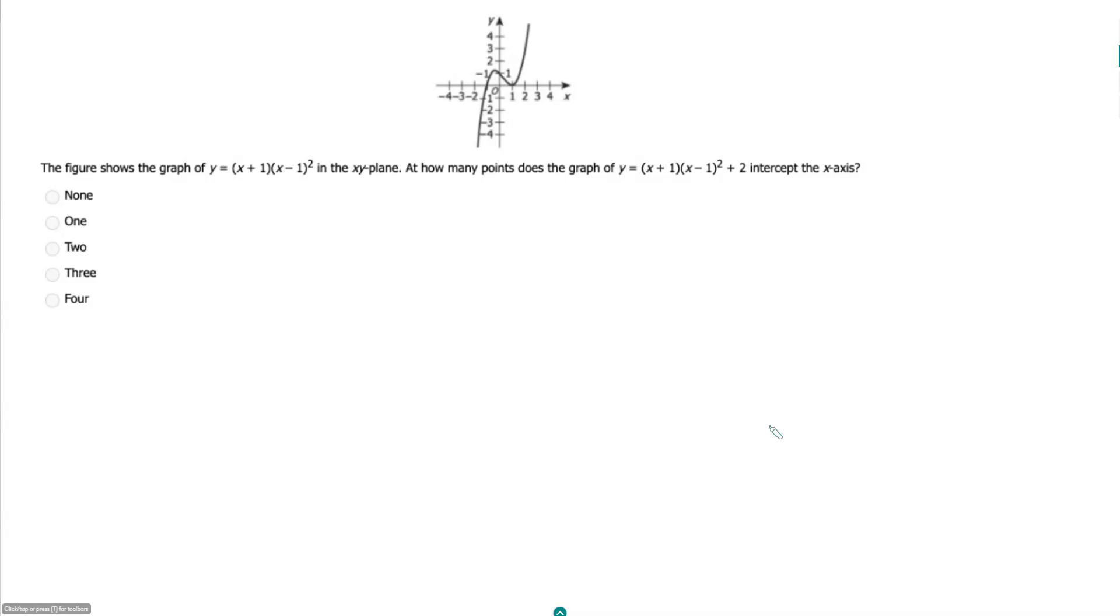The figure shows the graph of y = (x+1)(x-1)² in the xy-plane. And how many points does the graph of y = (x+1)(x-1)² + 2 intercept the x-axis?